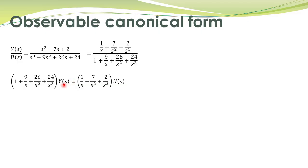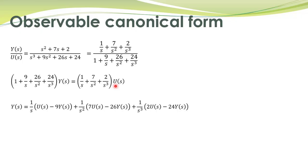We then multiply this denominator by Y(s) and bring U(s) to the right-hand side of the equation. We further rearrange to write this equation in a particular format. So Y(s) multiplied by 1 is written here, and then we have 1/s multiplied by U(s), and a term 9/s multiplied by Y(s). These two terms are written together as U(s) minus 9Y(s), with 1/s taken as a common factor.